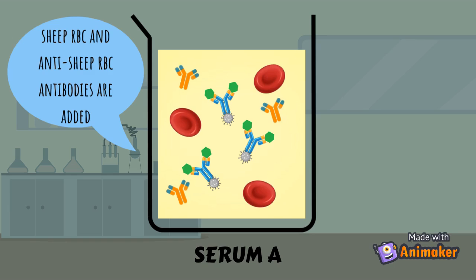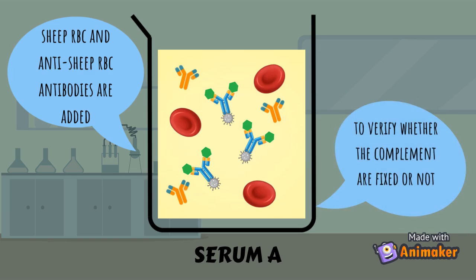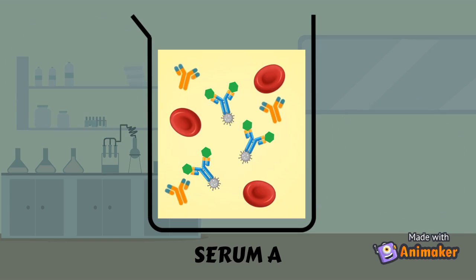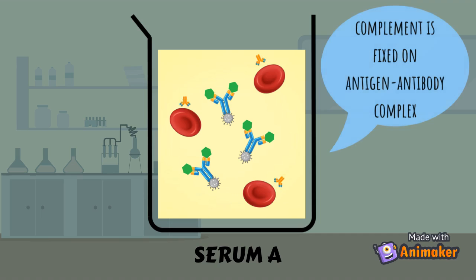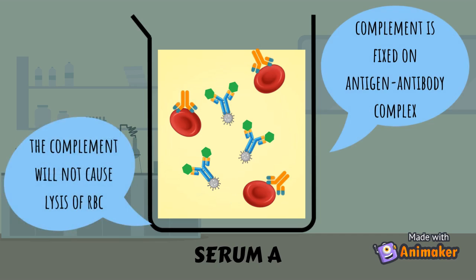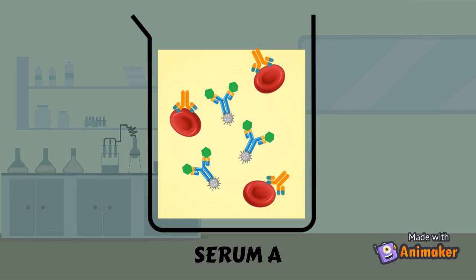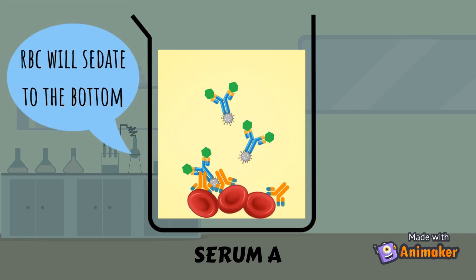Sheep red blood cells and anti-sheep red blood cell antibodies are added to the serum to verify whether the complement is fixed or not. As the complement is already attached to the antigen-antibody complex, it will not cause lysis of the red blood cells. Thus, the sheep red blood cells will sediment to the bottom.